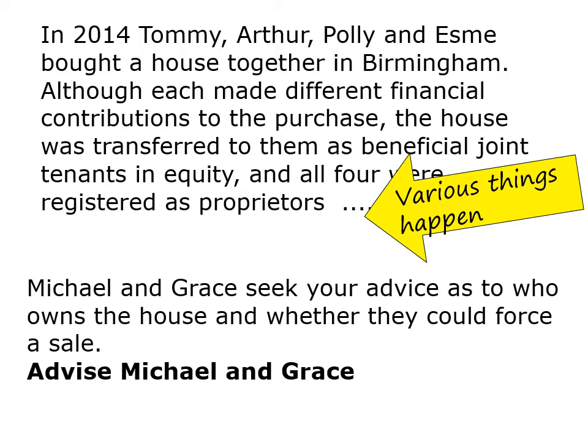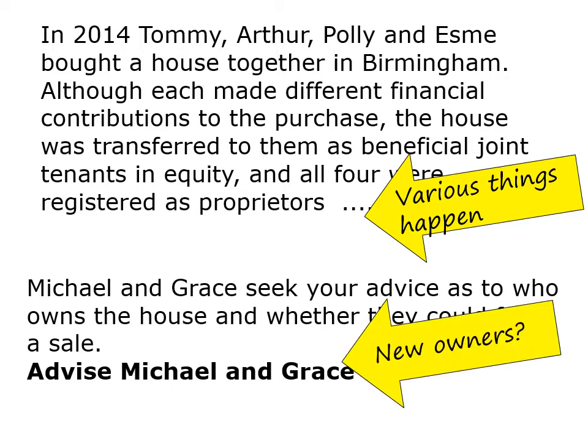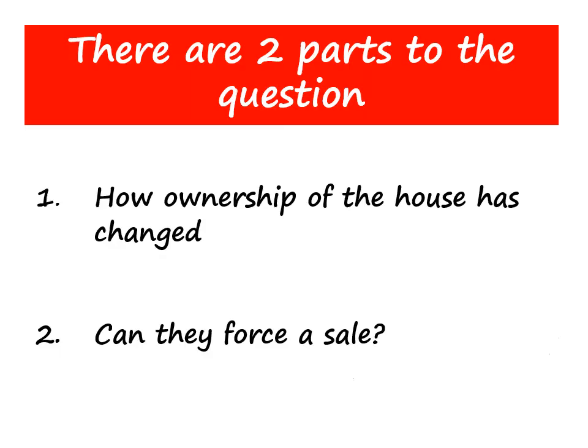As you will discover, Michael and Grace are claiming to be the current owners. And essentially there are two main parts to the question. In the first part you have to work out how ownership of the land has changed, and in the second part you need to consider how disputes between co-owners can be resolved — in other words, who can apply to court if co-owners disagree about selling the property and whether the court is likely to order a sale.